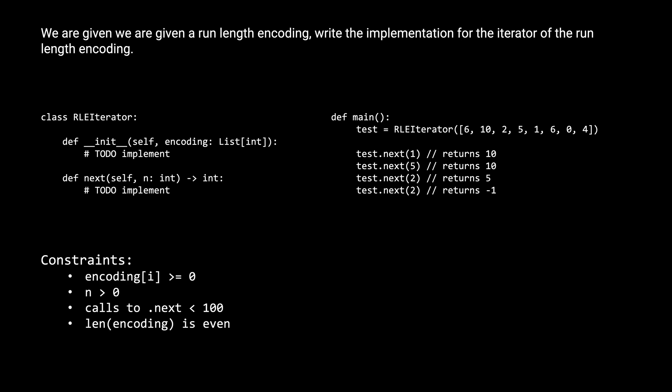The last thing is the constraints of the problem. All the elements in the encoding are going to be greater than or equal to 0. Also, the parameter passed in for next, n, is going to be strictly greater than 0. And the third constraint is that the number of .next calls is limited to 100, a constant number.